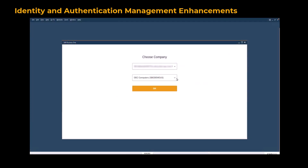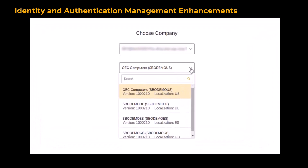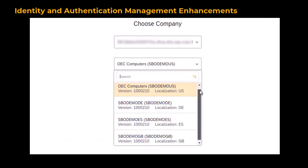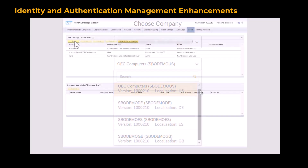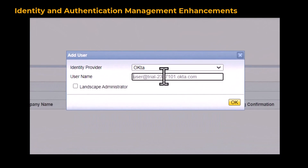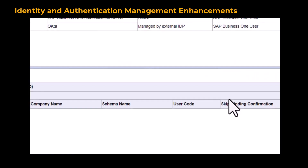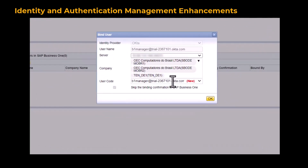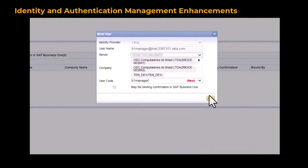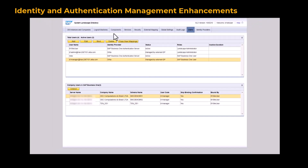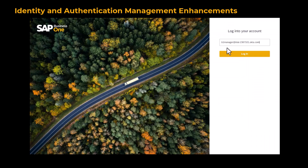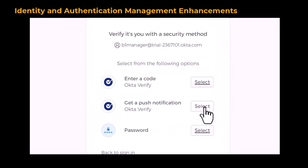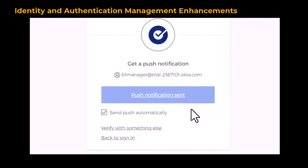When logging into SAP Business One, you can now see the localization and version information in the company list in the Choose Company window. After enabling Okta and binding the relevant users, you can log into SAP Business One with the bound IDP user account. When redirecting to the Okta login page, you can choose to set up a push notification. Push notifications trigger a notification in the Okta app on your mobile, and after accepting the sign-in, you can log into SAP Business One.